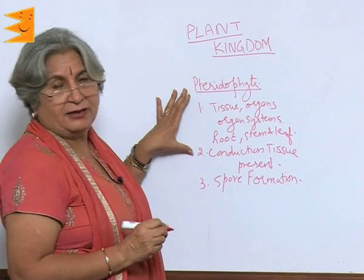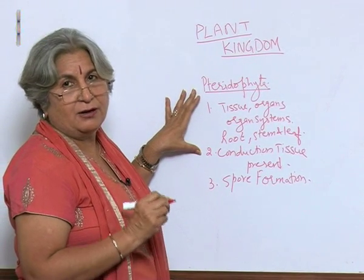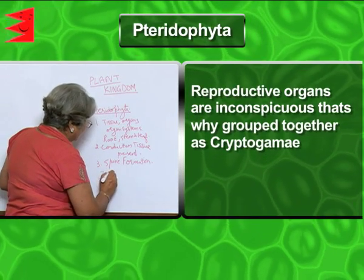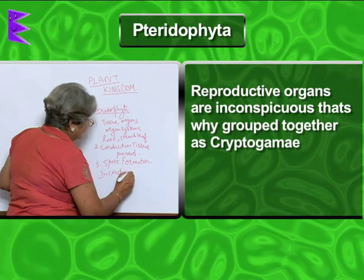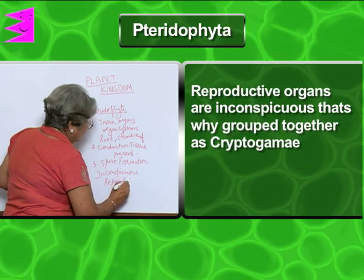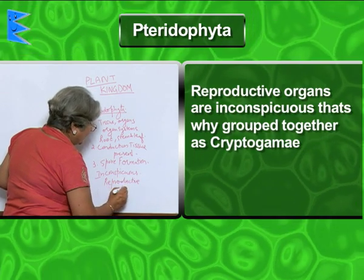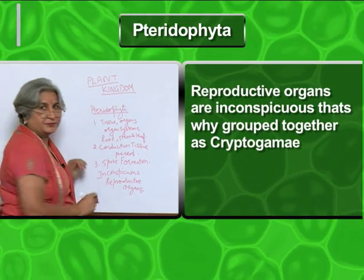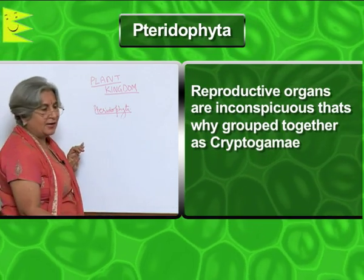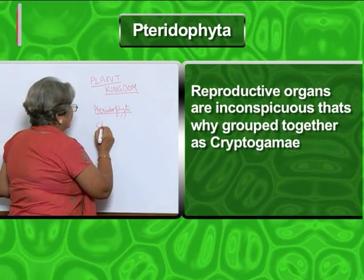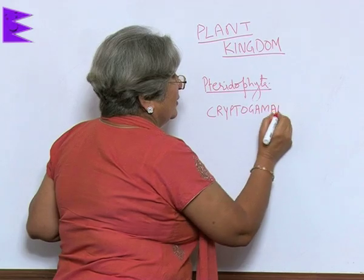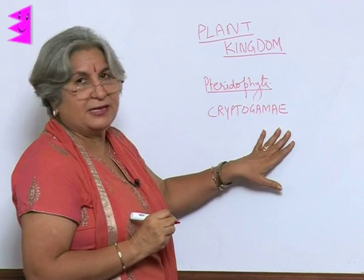In all these three divisions — thallophyta, bryophyta, and pteridophyta — the reproductive organs are inconspicuous, meaning they are not so easily visible. Such plants are put together in one group called cryptogamae, where 'crypto' means hidden and 'gamy' means marriage.